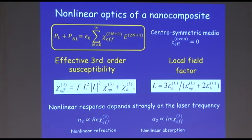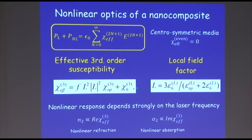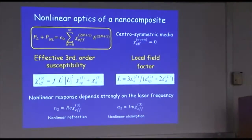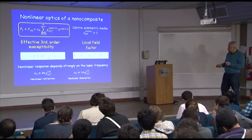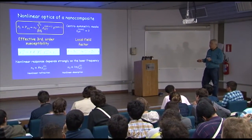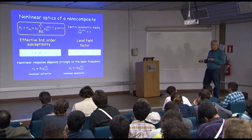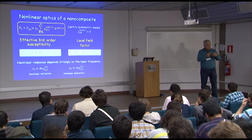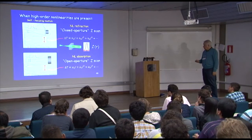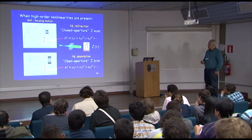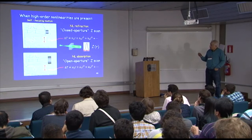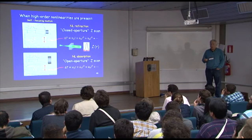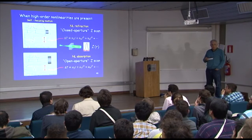We can say that nonlinear refraction is the real part of the effective Chi-3. It includes the real part of the local field factor contribution, and also the imaginary part of the local field factor, since L can be a complex number. Real and imaginary parts can be mixed. To measure that, we use a popular technique called Z-scan, which is based on the self-focusing effect. You have a beam focused in some region and a sample that you scan along the focal region.